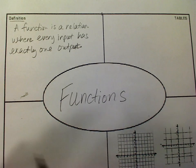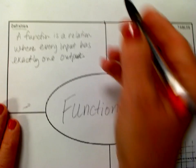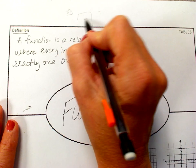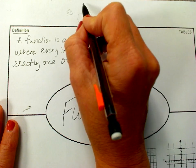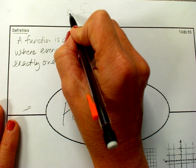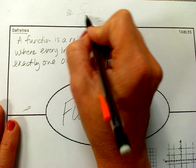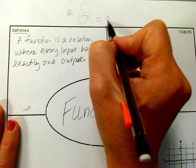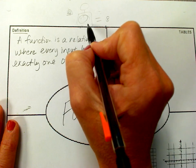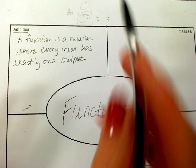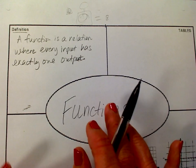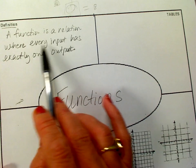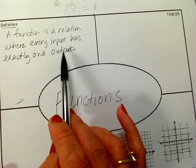You've seen function tables with machines that have a number going in, something happening, and a number coming out. So you have a little robot and it might say a 4 is going in, something's happening, and you're getting an 8 out. 6 is going in, something's happening, and you're getting a 12 out — it might tell you to times 2. So you've seen these function machines, kind of cute and fun, but we're going to really dive more into it. The definition of a function is a relation where every input has exactly one output.